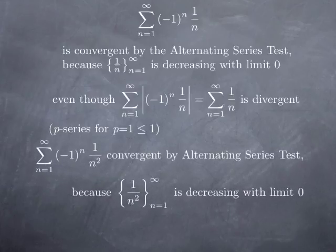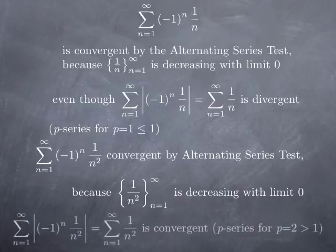If we compare with the series of (-1)^n multiplied by 1/n², this is also convergent by the alternating series test because the sequence of absolute values of the general term 1/n² is decreasing with limit 0. But the series of absolute values of the terms converges as well — it's the series of 1/n², a convergent p-series because p equals 2, which is greater than 1.